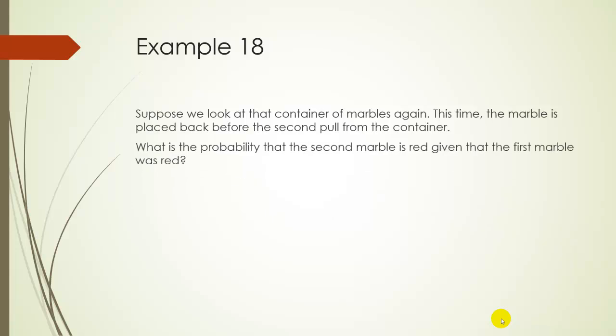So in this example, what's the probability that the second marble is red, given the first marble was red? Well, there's still 5 marbles left in the container, because we put it back, and there's still 2 red marbles left, so it would be 2 out of 5.